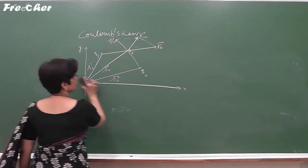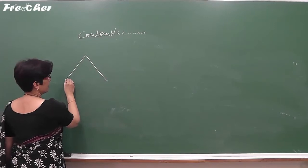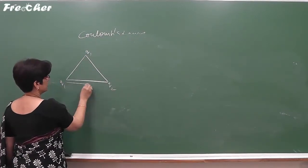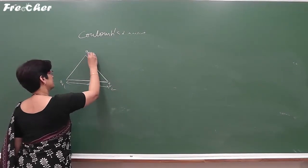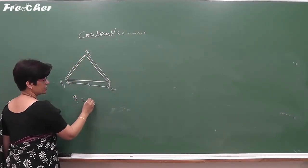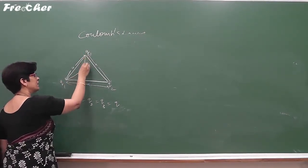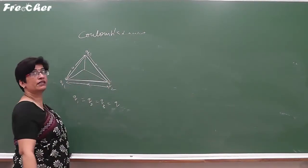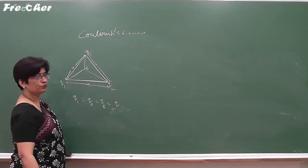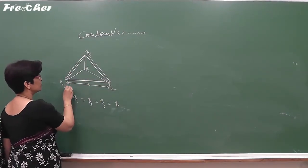Let us assume three point charges placed at the vertices of an equilateral triangle with side A: charges Q1 at vertex A, Q2 at vertex B, and Q3 at vertex C. The magnitude of all three charges is the same, say Q. We need to find the force on another charge, capital Q, placed at the centroid O of the triangle. The centroid is the point of intersection of the medians.